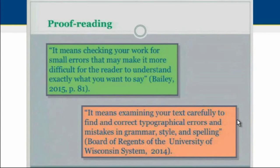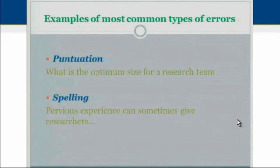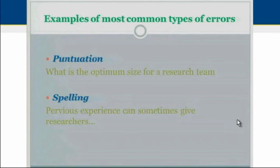There are different types of errors; the most common ones include errors regarding punctuation — for example, a missing question mark — and errors focused on misspelling. For instance, the word 'previous' may be misspelled. These are some of the most common types of errors we can find.